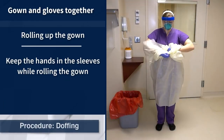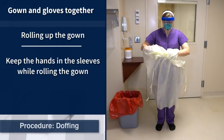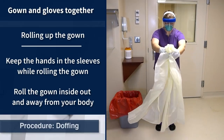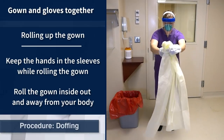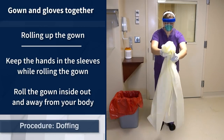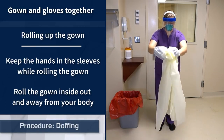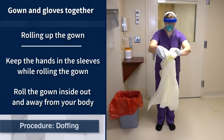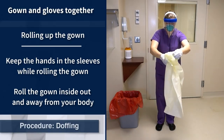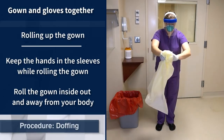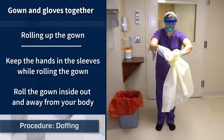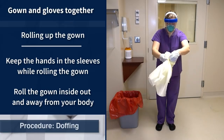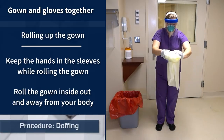Next, keeping the hands in the sleeves, roll the gown inside out and away from the body. Bending slightly forward will help keep the gown at a distance. Once the gown is rolled up, pull the hands out while removing the gloves with the sleeves, one arm at a time.